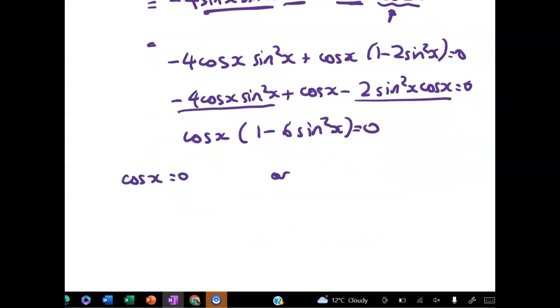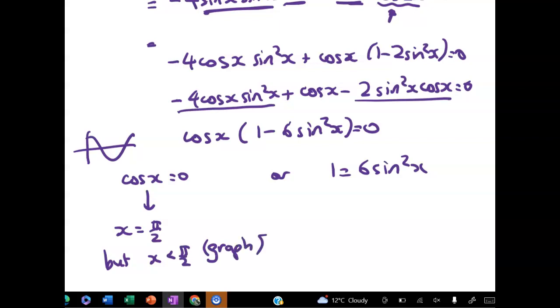Cleaning that up gives me cos of x times 1 minus 6 sin squared x equals zero. That means that either cos of x equals zero, or 1 equals 6 sin squared x. So think about your cosine curve. This gives me a solution of x equals pi on 2. But we know from the graph that x must be less than pi on 2. So at point M, x is less than pi on 2. So this is not a solution.